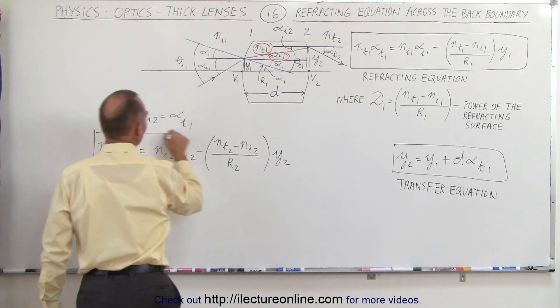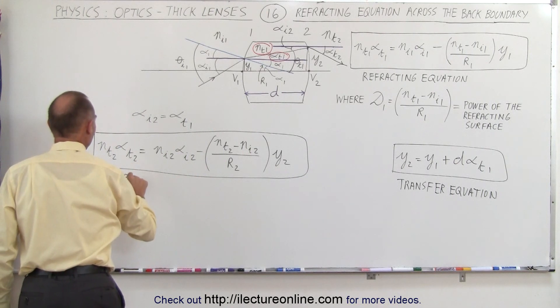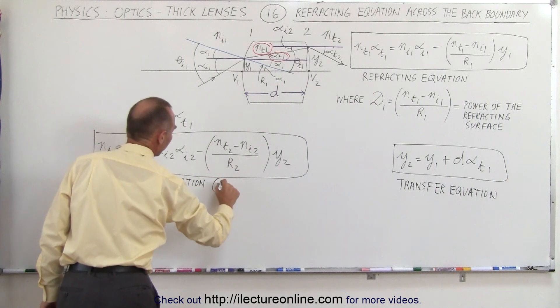of the point of exit relative to the optical axis, that would be Y2. And this can then be described as being the refracting equation of the back side of the lens. And that would be for boundary 2.